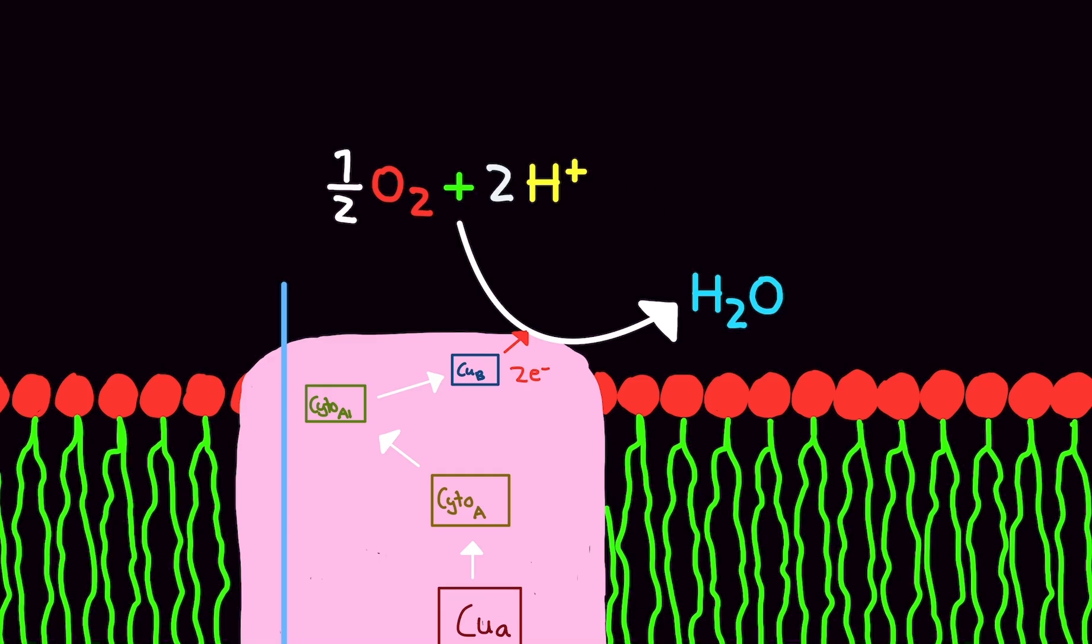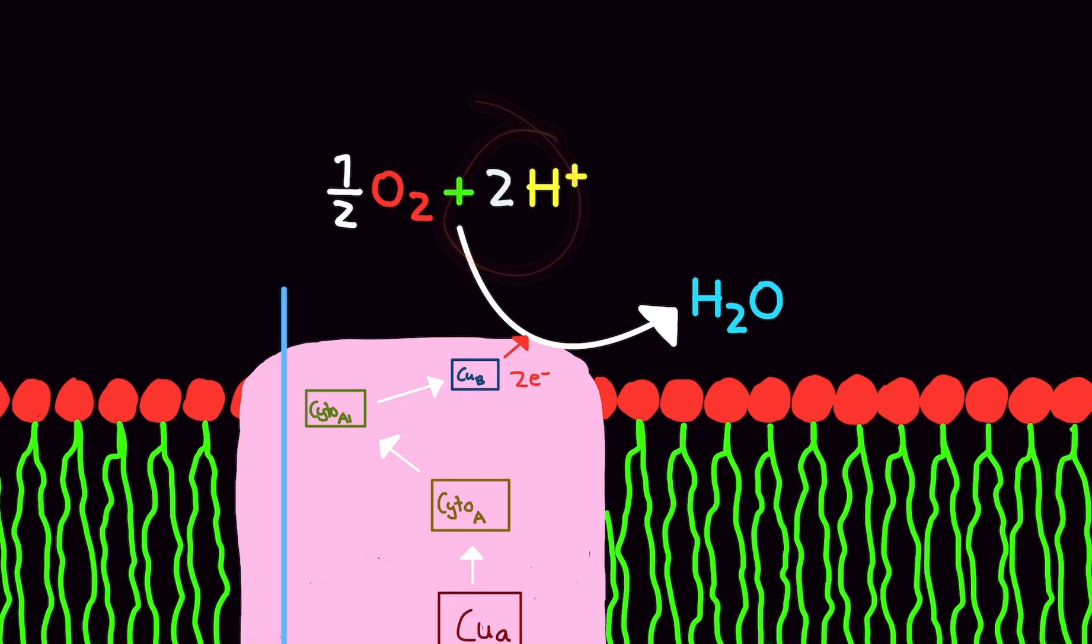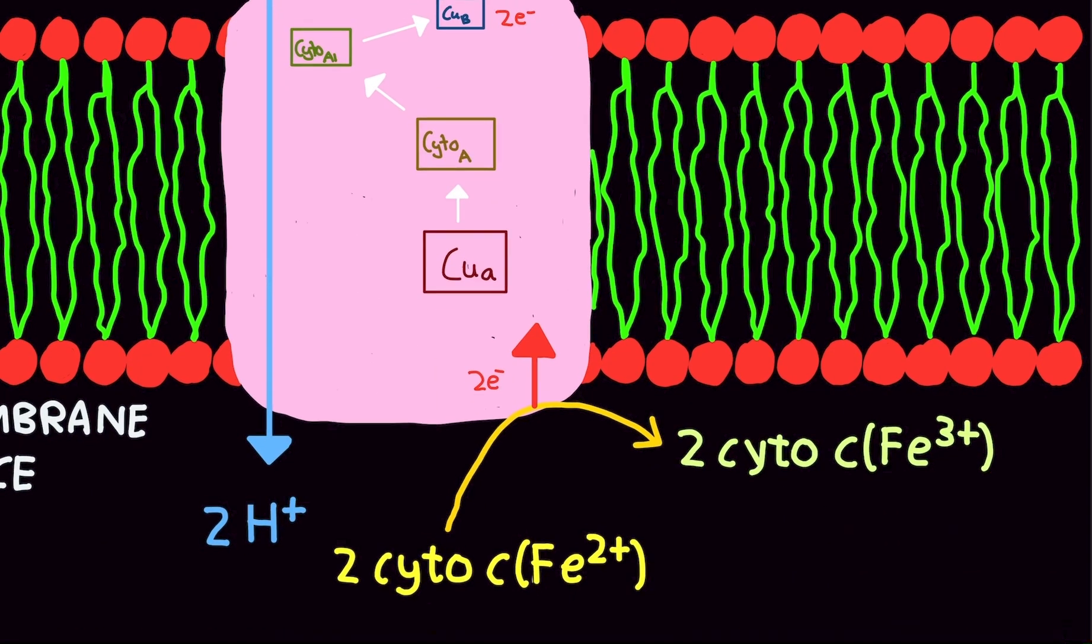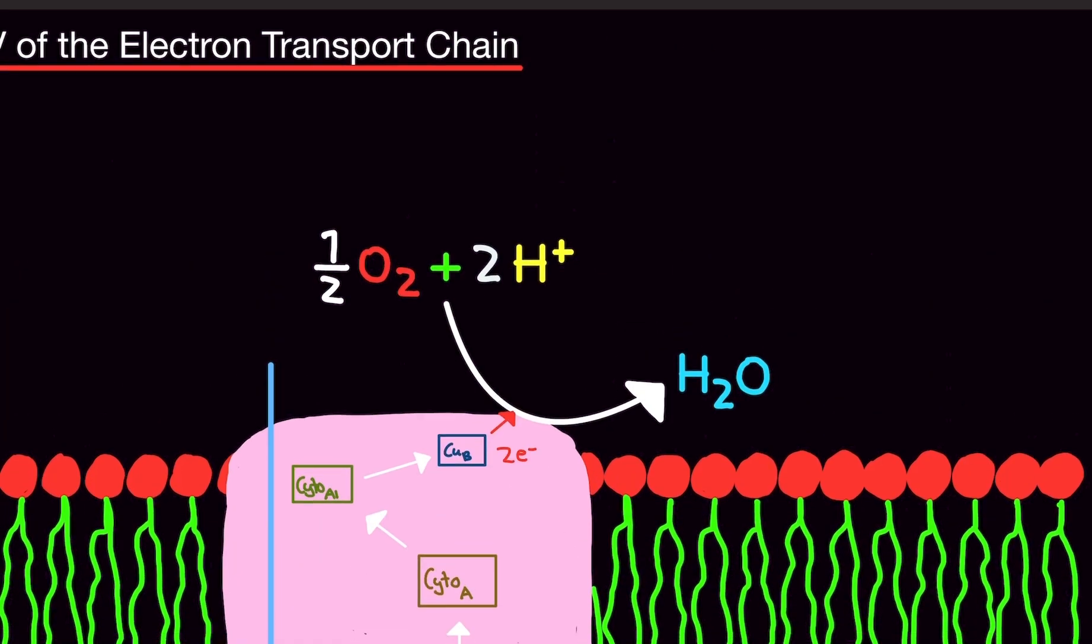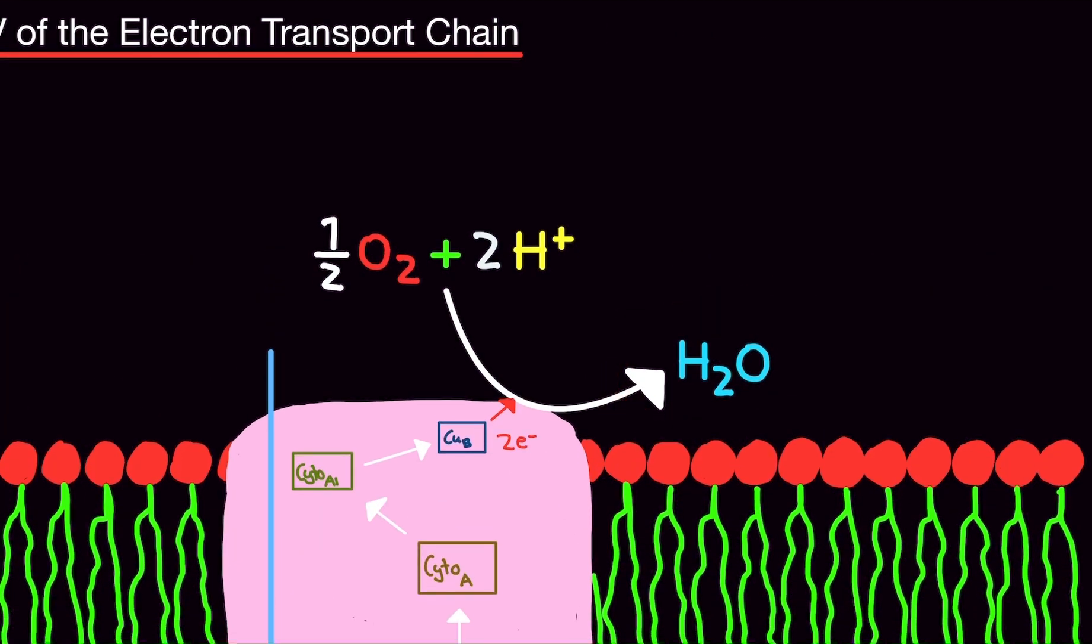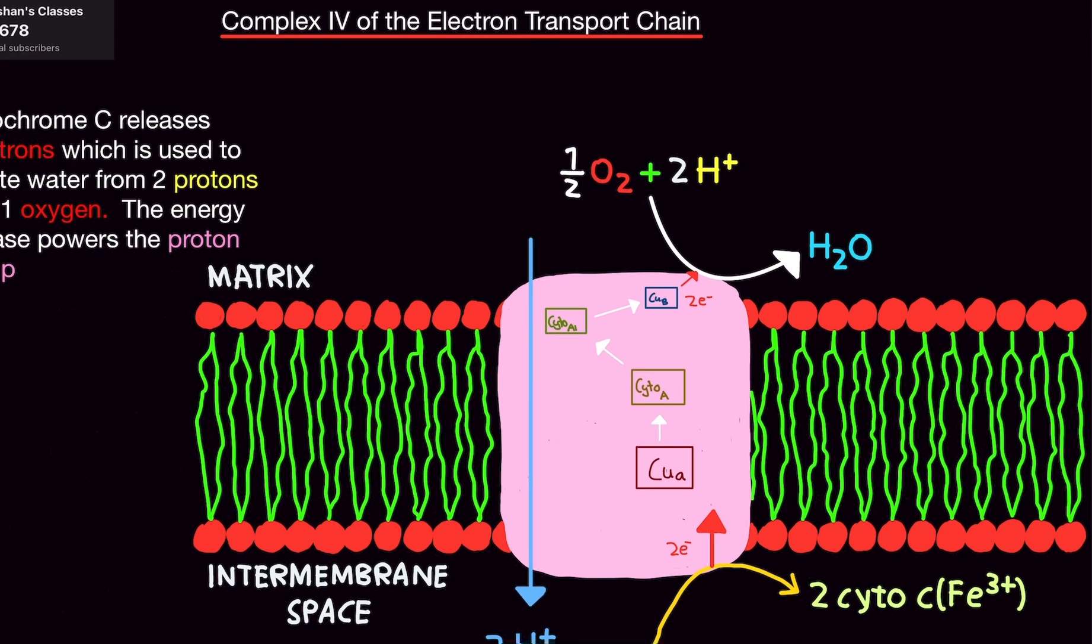So what's going to happen is this half O2, so basically just one oxygen atom plus two protons plus the two electrons that are coming from cytochrome C will make water. This water is what is used for cellular processes throughout the body. So it can either stay in the matrix and just chill out there, it can participate in metabolic reactions that require water, or you can excrete it out in pee. So when you urinate, this could be the water that's there.